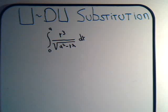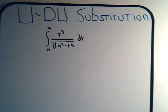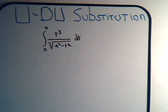Okay, we've been looking at applying the U-DU substitution to solve various types of integral problems. The ones we've encountered so far, the integrals have been pretty straightforward. Here we want to try to apply to this problem. We have the integral of r³ divided by the square root of a² minus r², and r goes from 0 to a.